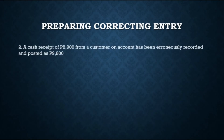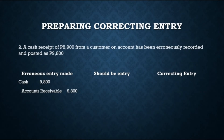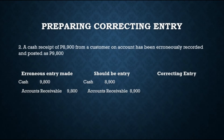In the next example, a cash receipt of 8,900 from a customer on account was erroneously recorded and posted as 9,800. The accounts used were correct, but the amount was wrong. The erroneous entry was debit Cash 9,800 and credit Accounts Receivable 9,800, but the should-be entry is debit Cash 8,900 and credit Accounts Receivable 8,900. Since Cash was over-debited and Accounts Receivable was over-credited by 900, the correcting entry is to debit Accounts Receivable and credit Cash for 900.